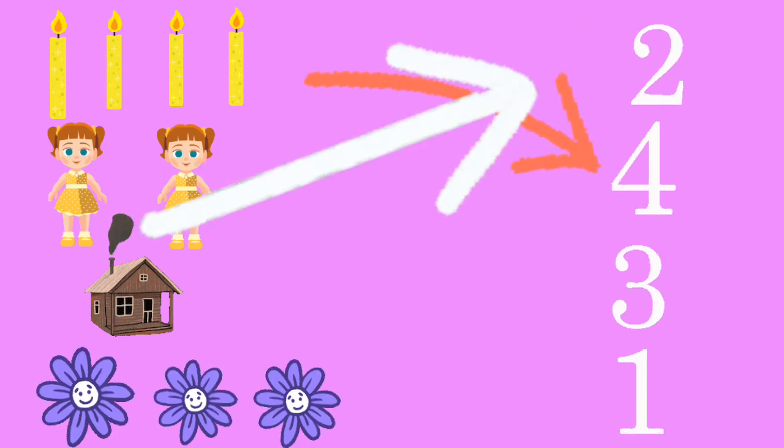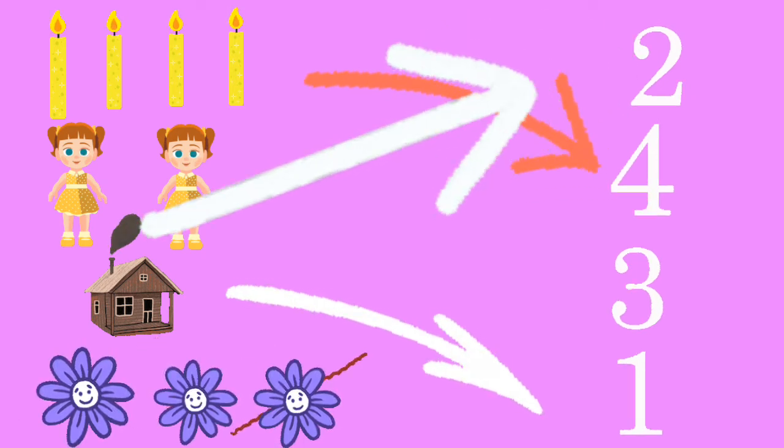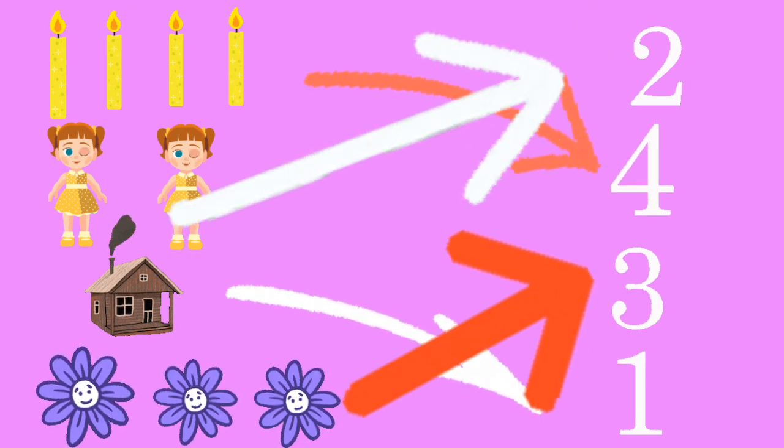Next is a house, match it with number one. Then it's one flower, two flowers, and three flowers. So match it with number three. That's all for today, bye.